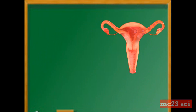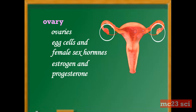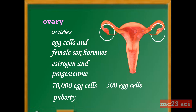Next is the ovary. Females have two ovaries. The ovary produces egg cells and female sex hormones — estrogen and progesterone. About 70,000 egg cells are present in the ovaries, and only 500 egg cells will mature. The matured egg cell is released one by one every month during puberty until the age of 45 to 55 years old.